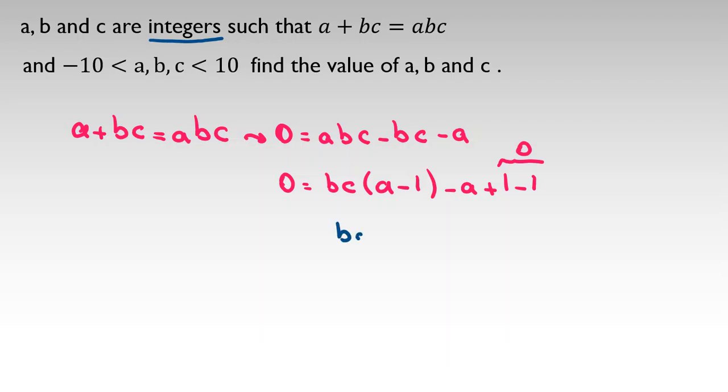Now I try to factorize more: bc times (a - 1) minus (a - 1) minus 1 = 0. Now I factor from (a - 1): it will be bc - 1, and I take this negative one to left hand side, it will be plus one.